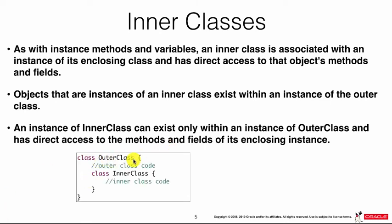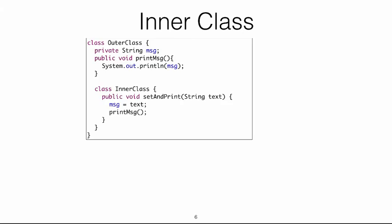Think of it like an egg: the outer class is the egg white and the inner class is the egg yolk. For example, the outer class has a message field and a printMessage method. The inner class has a setAndPrint method that sets the message — which is a global variable in the outer class — and then calls printMessage. This demonstrates that the inner class has access to variables and methods declared in the outer class.